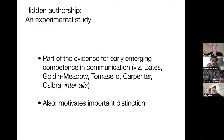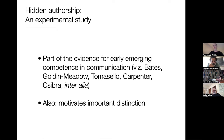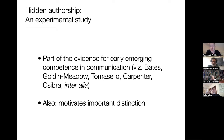Children are able and willing to differentiate informative and communicative intentions on the production side. I think this is part of the enormous body of evidence from many labs that the competence in communication is early emerging — part of the ordinarily developing human cognitive phenotype. We're a communicative species. Other people would use simpler words like innate, core cognition, or biological endowment, but whichever term you prefer, communication is part of that. It also motivates these important distinctions between the informative and the communicative aspect.